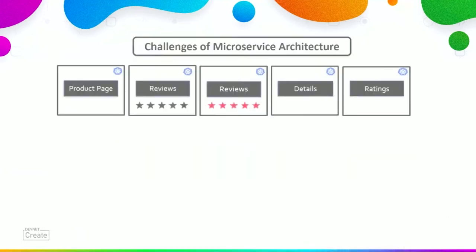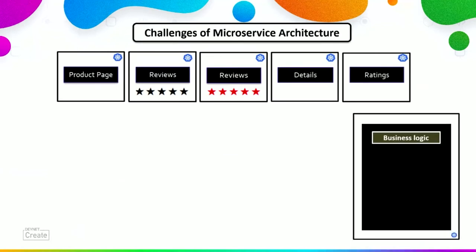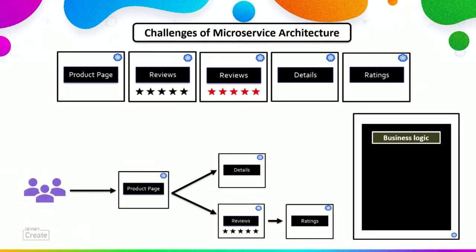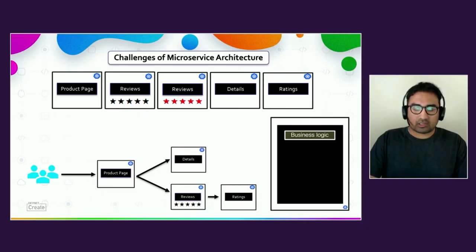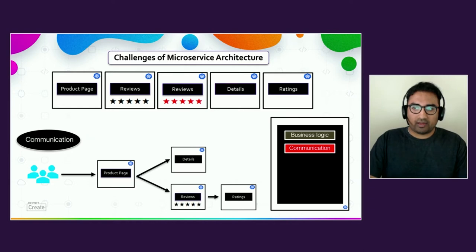Let's look into the challenges of this microservice architecture. Each microservice has its own business logic — Product Page handles requests, Details handles the details, Reviews handles reviews, and Ratings handles ratings. Microservices also need to talk to each other, so proper endpoints must be configured for each service. If we add a new microservice, we need to add that endpoint into all microservices that need to communicate with it, and this information lives inside the application code.